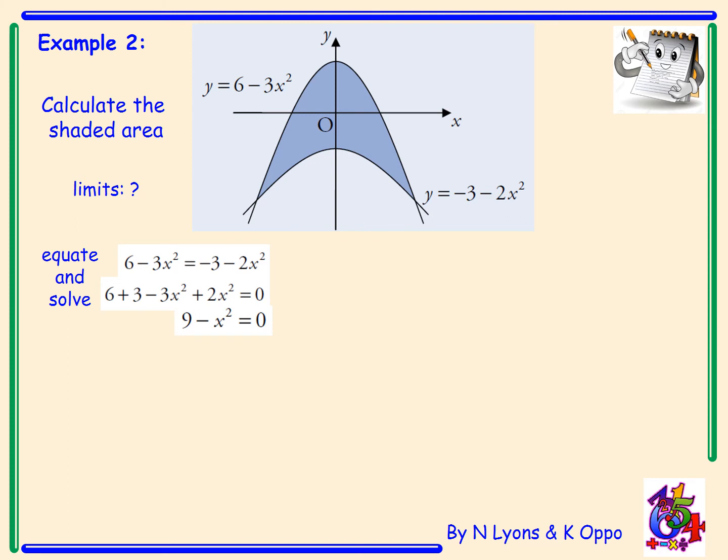Simplify: I get 9 minus x squared equals 0. The difference of two squares. That's (3 plus x)(3 minus x) equals 0. So x is minus 3 and x is 3. So it's symmetrical about the origin, about the y-axis.